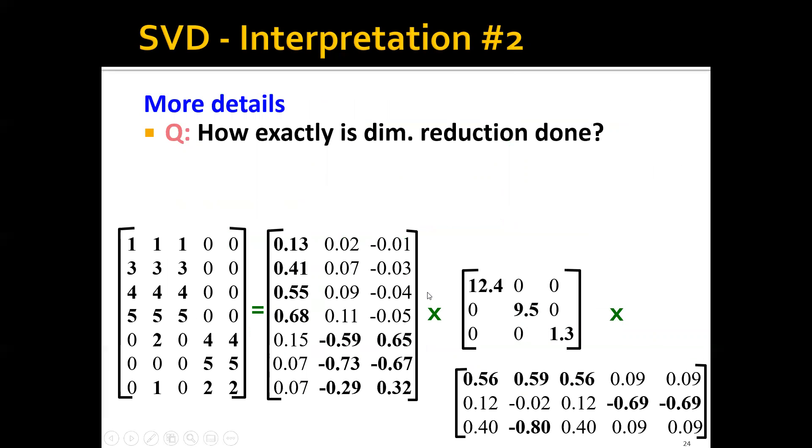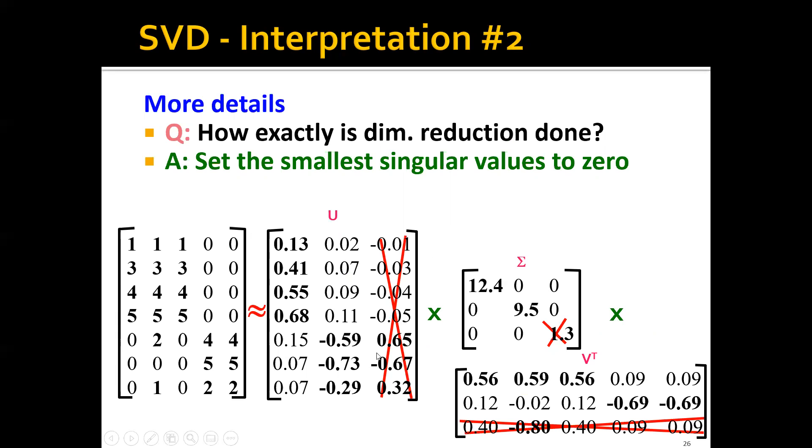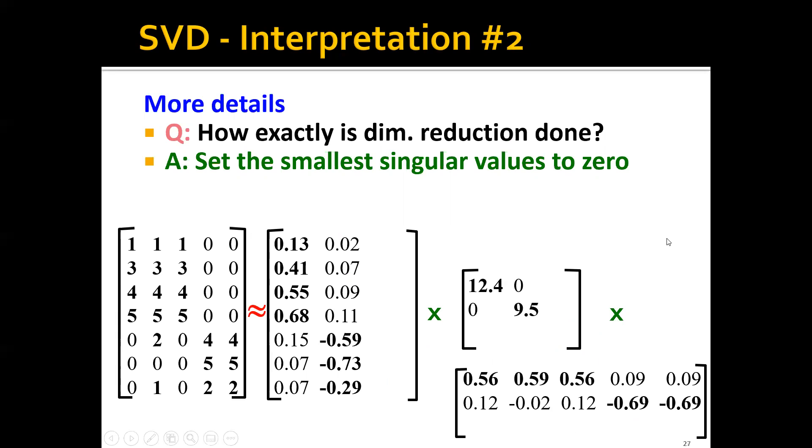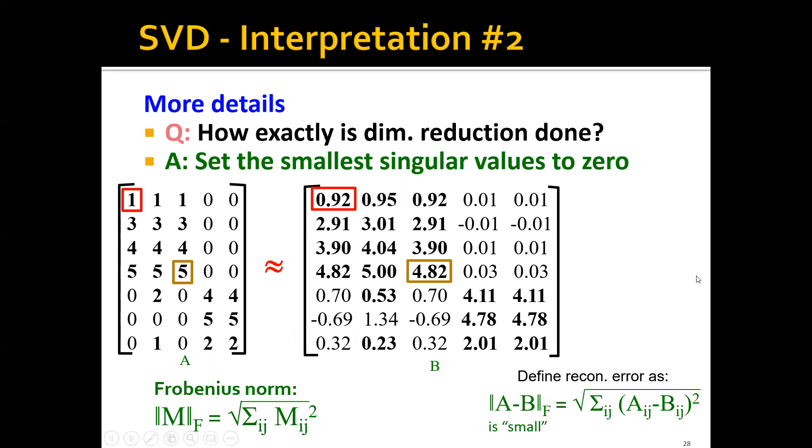So how do we exactly do this dimensionality reduction? We do this by simply setting the smallest singular value to zero. By doing this, we're effectively ignoring the last column of U and ignoring the last row of V-transpose. Basically, we are approximating this input rating matrix using the product of these three smaller matrices. Now let's see how good this approximation is.